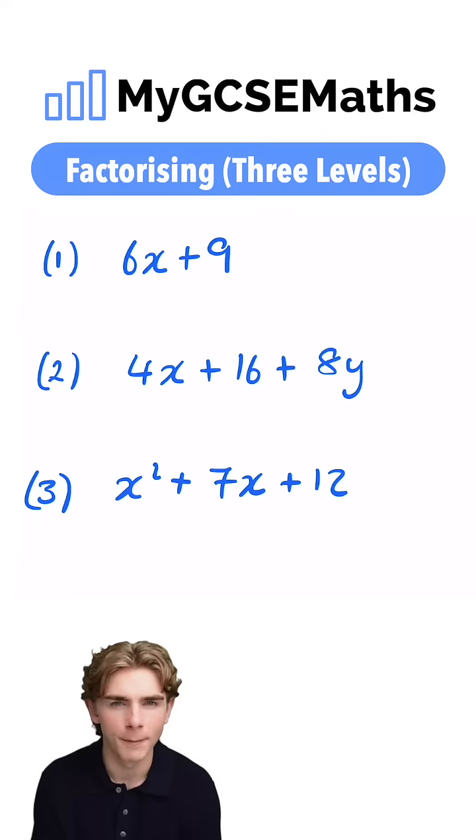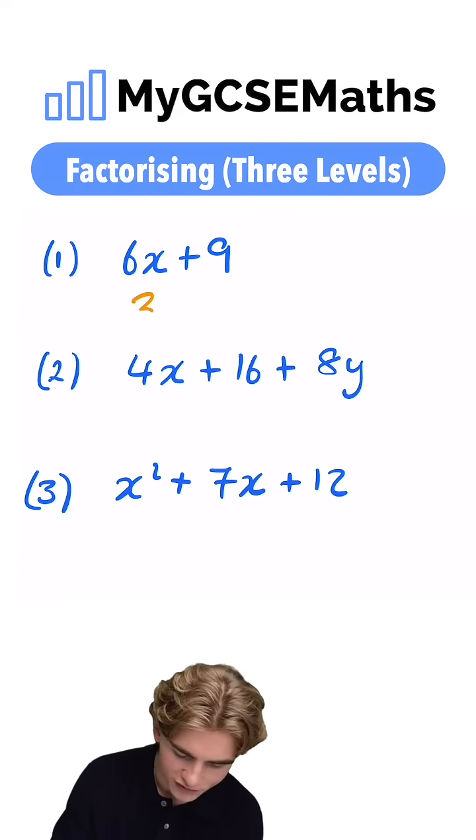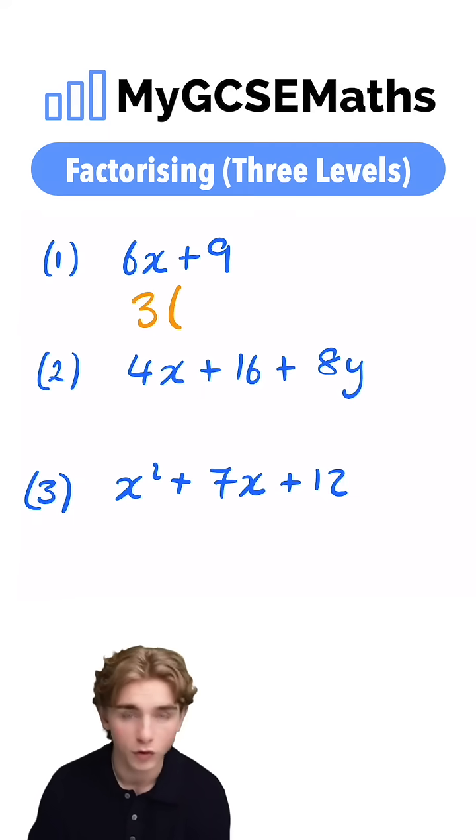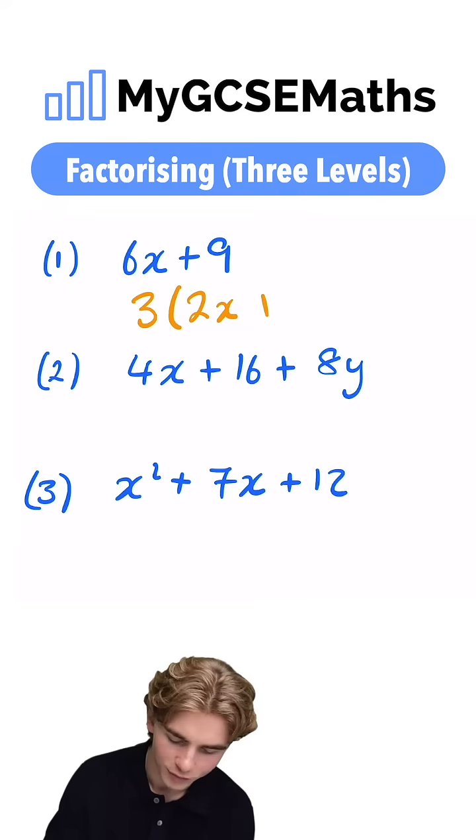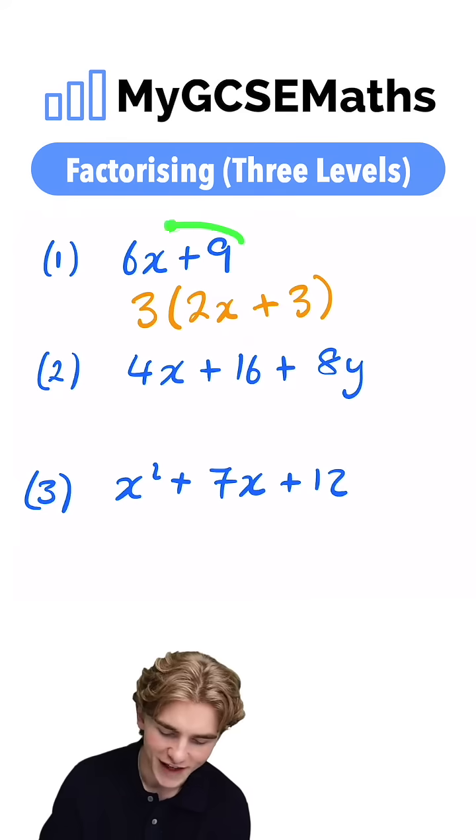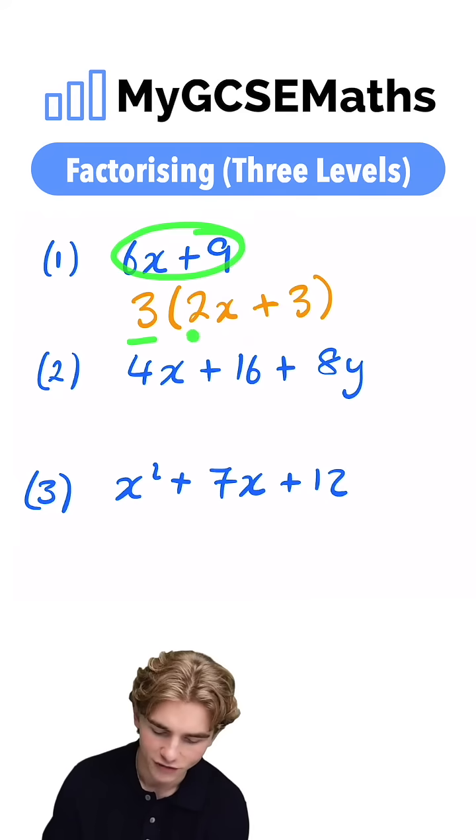Now, we need to find a number which goes into both 6x and 9. 3 is going to be a number which goes into 6x and 9. And what do we multiply by 3 to get 6x? We multiply it by 2x. What do we multiply by 3 to get 9? We multiply it by 3. So we can write 6x plus 9 as 3 times by 2x plus 3.